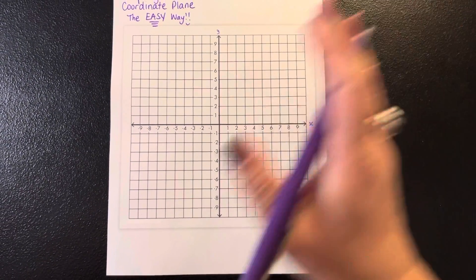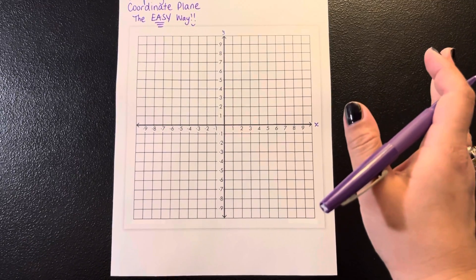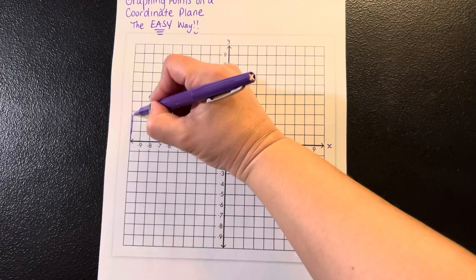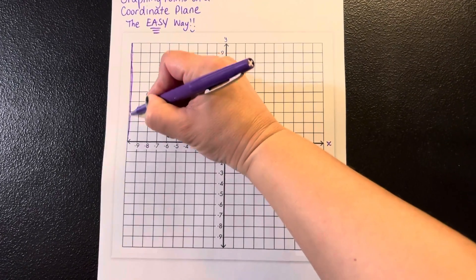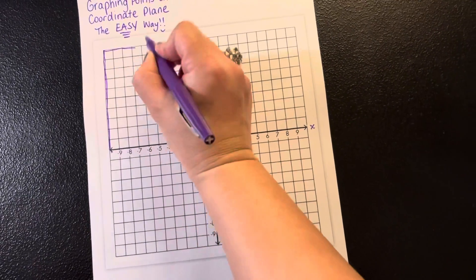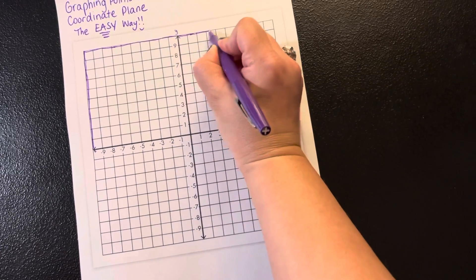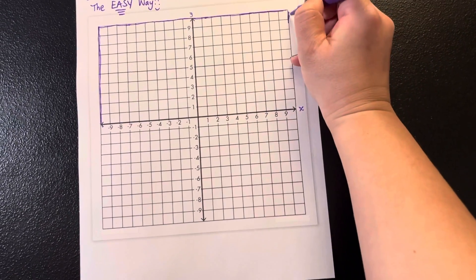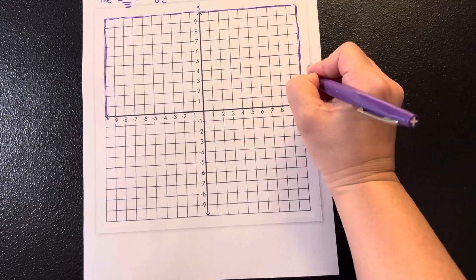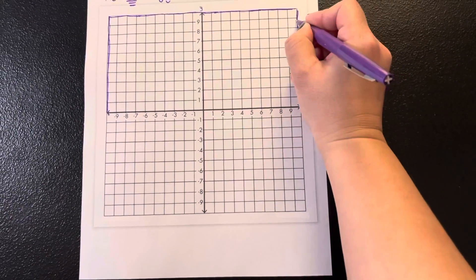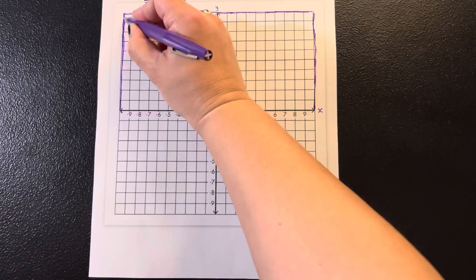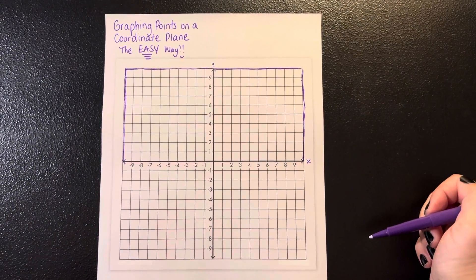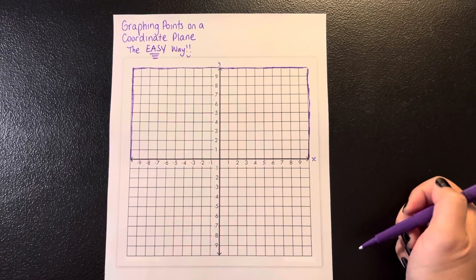Now this might look crazy when you're graphing, like where do I start? So when I explain to my students, I always want you to think of this as a building. I don't usually draw this out, but I'm doing this for visual purposes. So here's my building right there. The top two quadrants, I want you to think of the upstairs of the building. The bottom two quadrants, I want you to think of the downstairs.